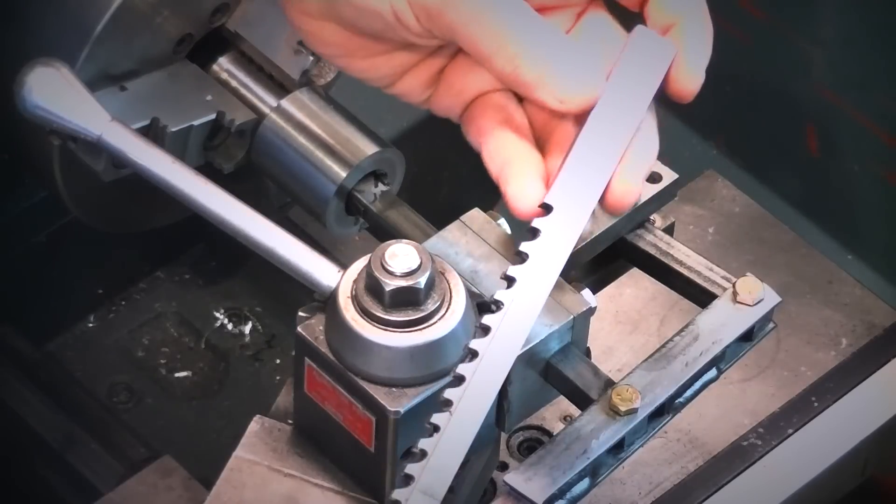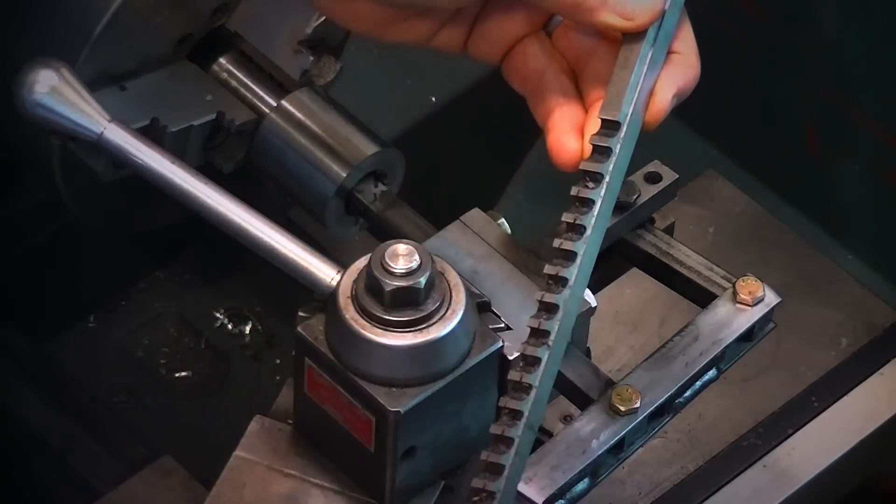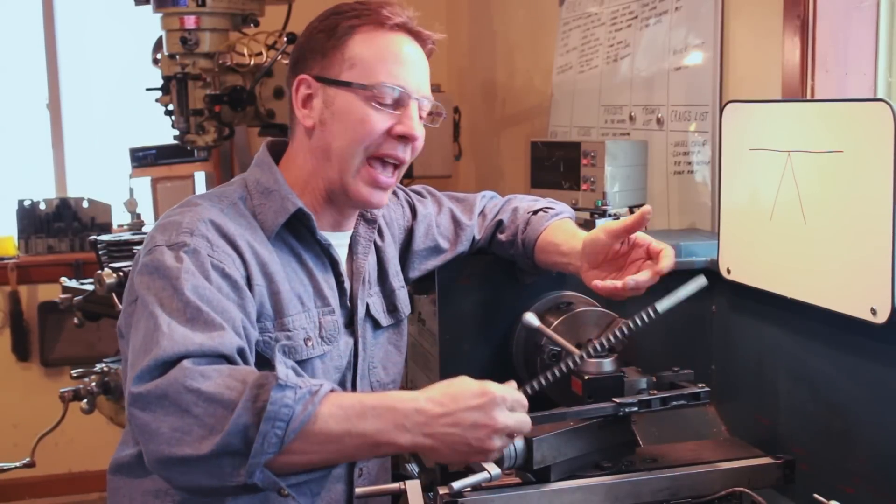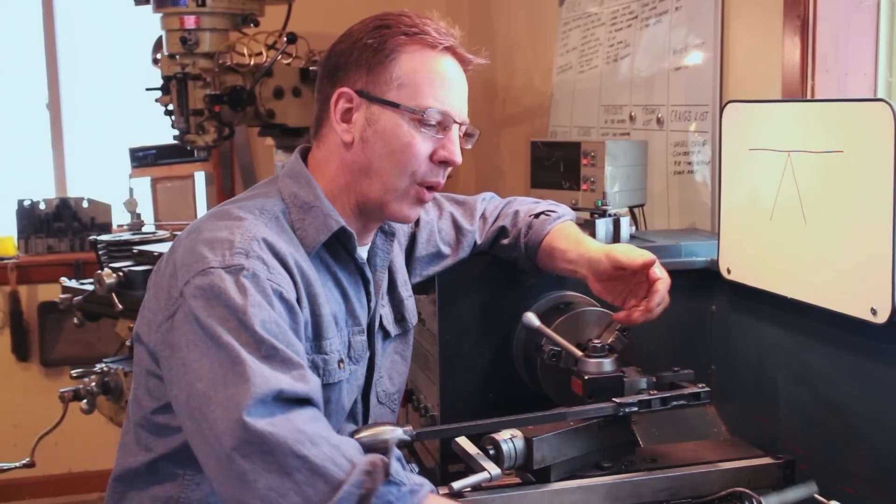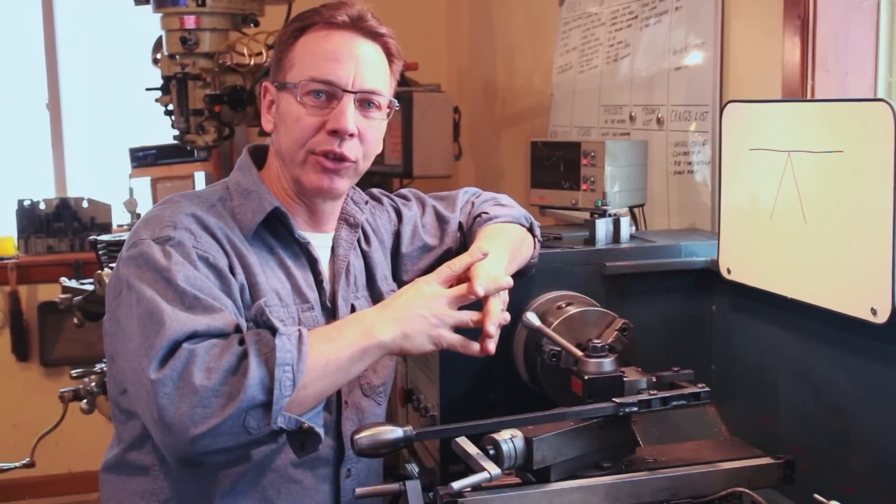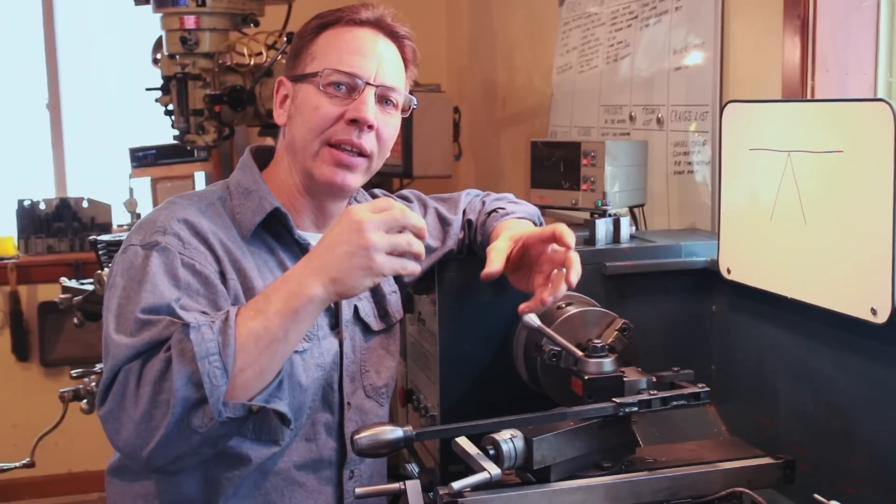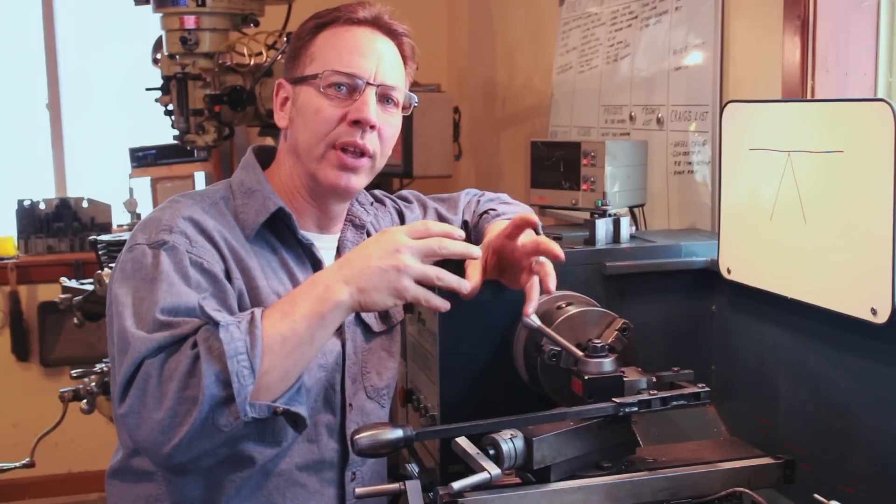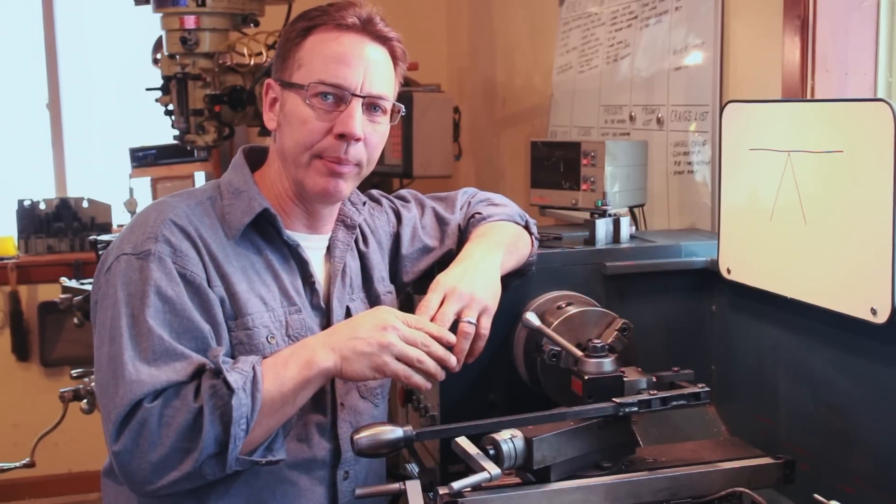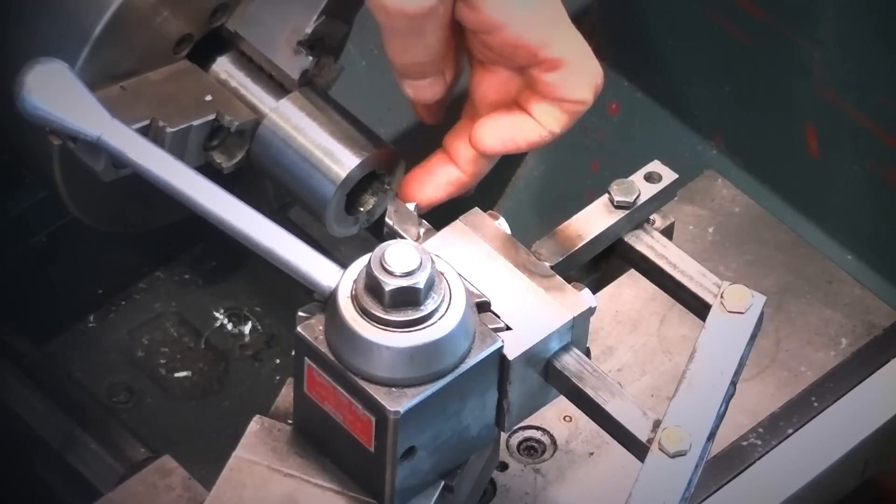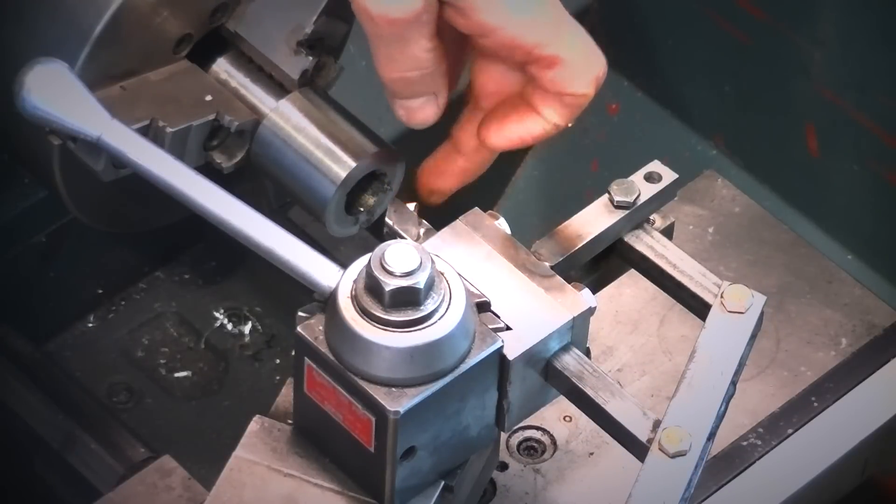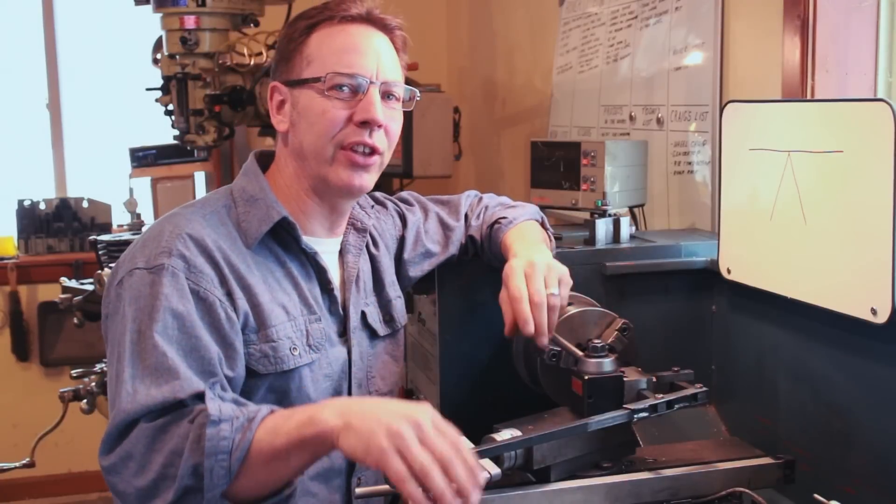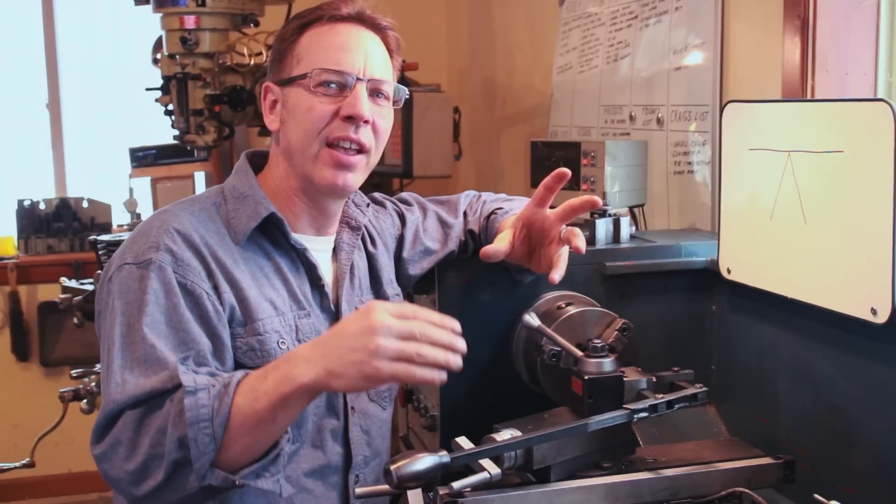A cutter on a broach has a series of progressively shaped teeth, and it's mounted on either a shaft or a die of some sort. Then that die or cutter is forced on or through the material to create a shape. This only has one tooth, so I think we should change the name to maybe a slotting tool fixture or maybe a mini shaper fixture.